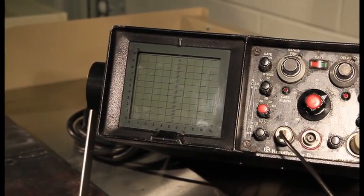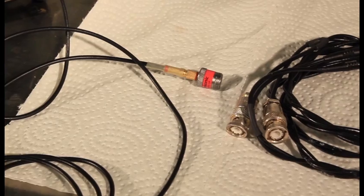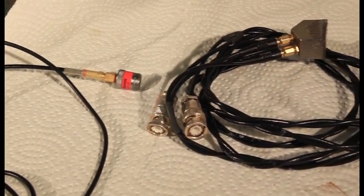The basic ultrasonic equipment consists of a power source with CRT screen, probes, and calibration blocks.